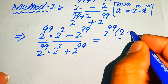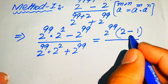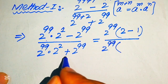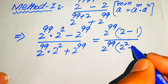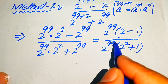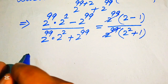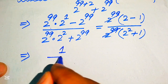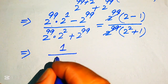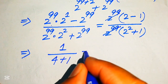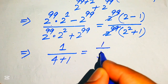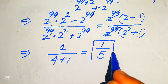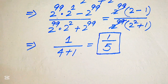Taking 2 to the power of 99 as common from the numerator, the remaining terms are 2 minus 1. Similarly, from the denominator, 2 to the power of 99 is taken as common and the remaining terms are 2 squared plus 1. The common factor cancels out, and we obtain the simplified form: 2 minus 1 equals 1, divided by 2 squared equals 4, plus 1 equals 5. So 1/5 is the final simplified form from Method 1.